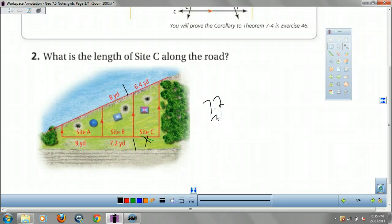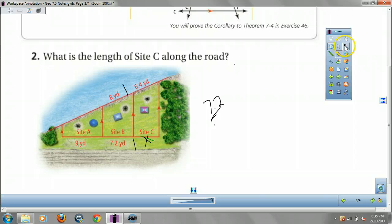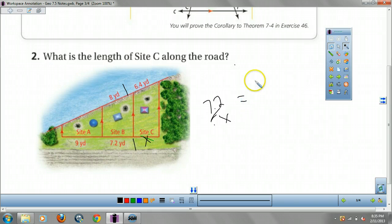7.2 over X. I'm going to use my mouse for timing. 7.2 over X equals, that's my parallel lines, 8 over 6.4. Okay, I'm hoping my mouse survives through the rest of this.